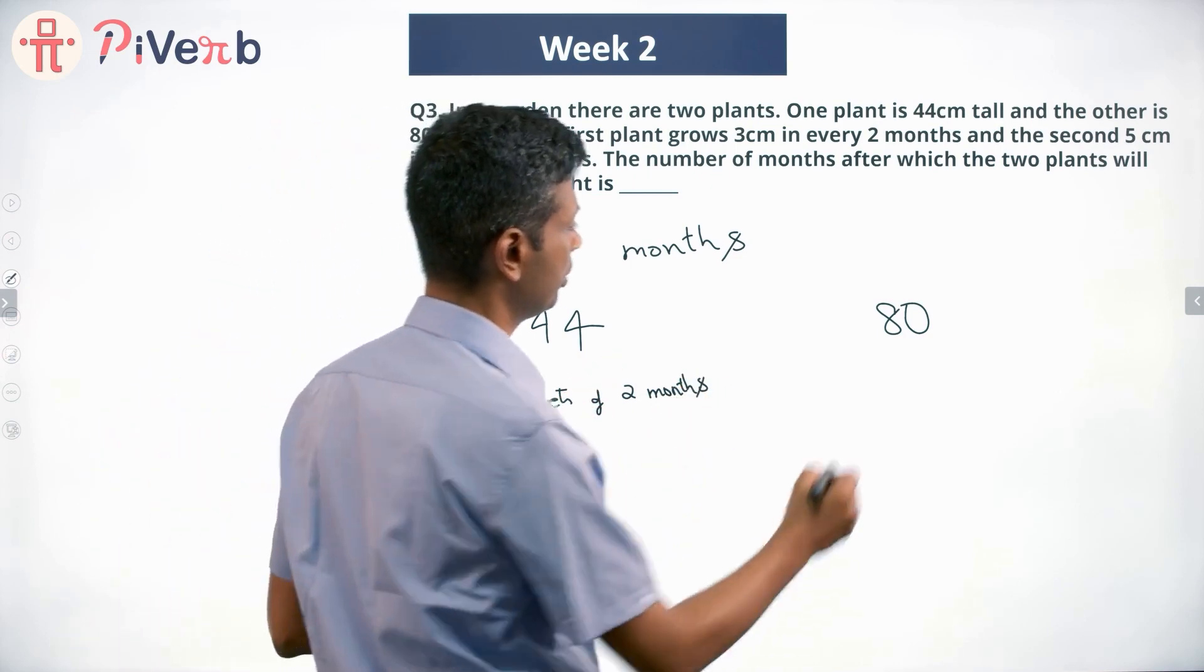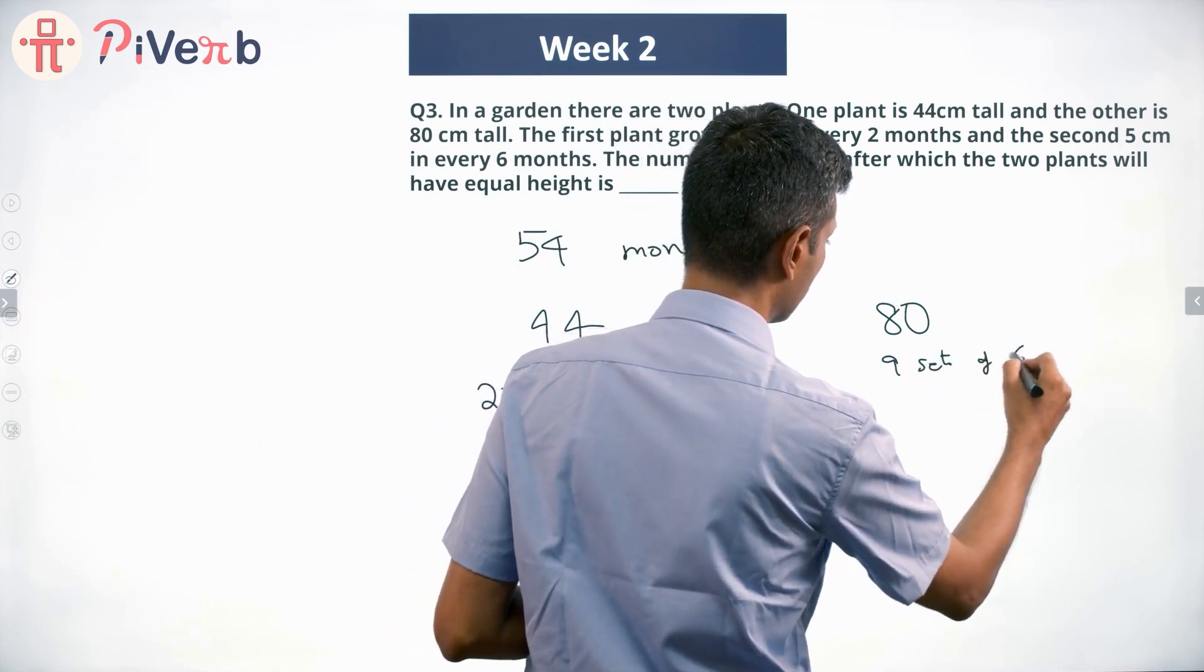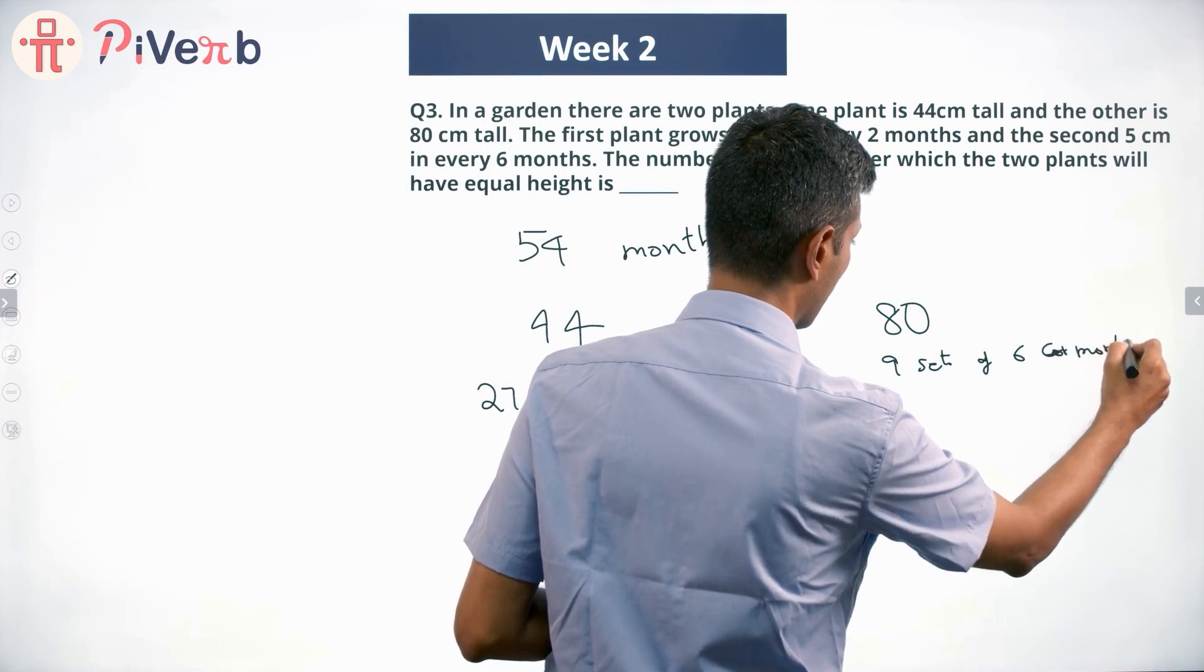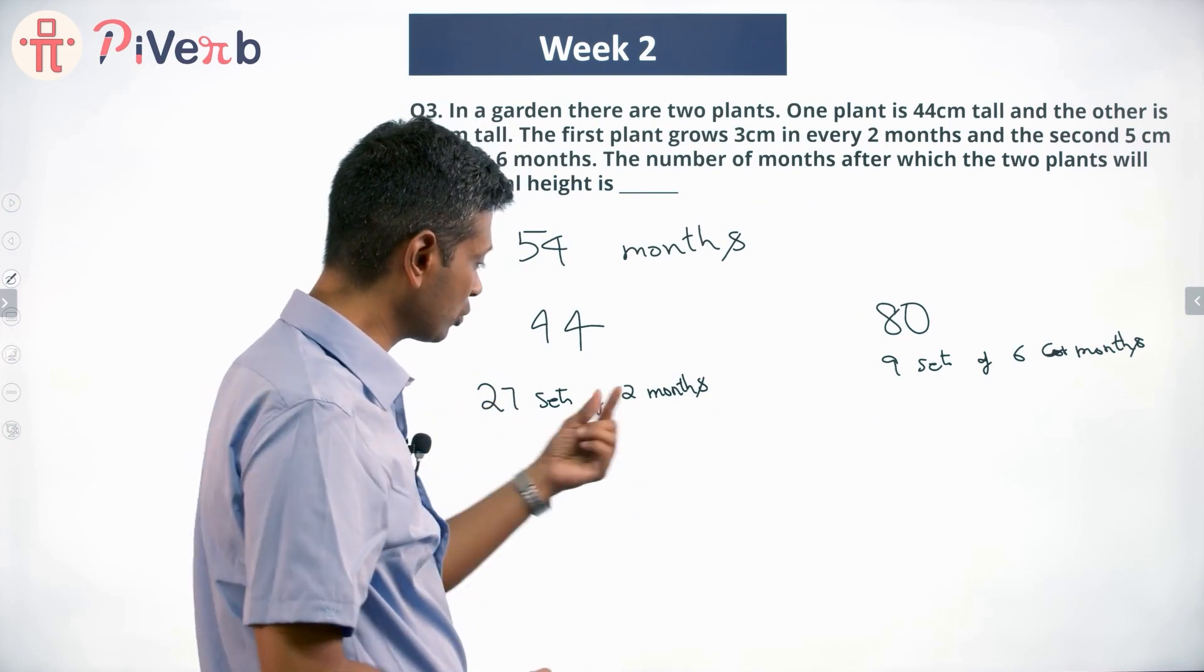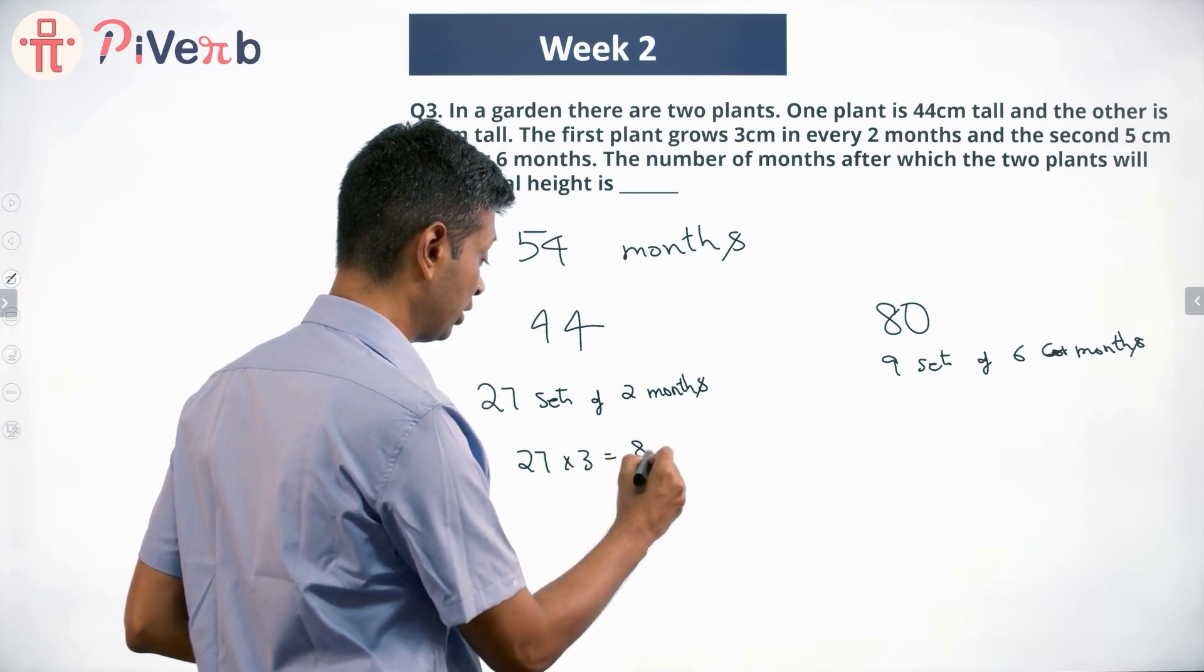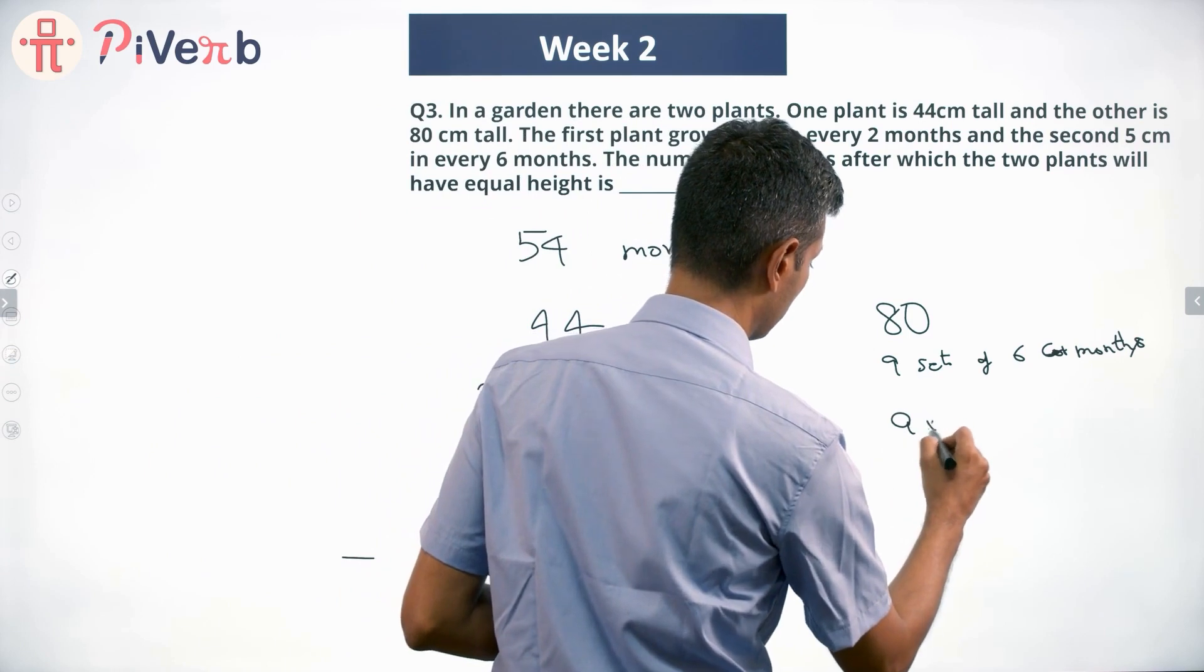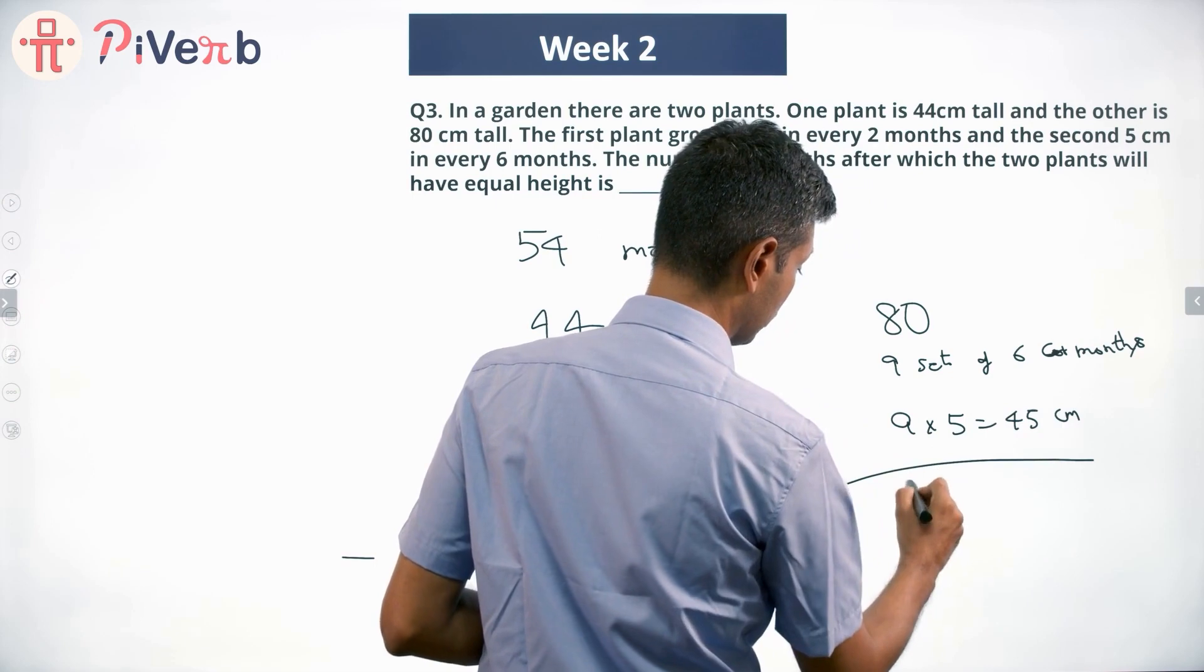This grows 54 centimeters, or 9 sets of 6 months. In this case, 27 sets of 2 months each. Each 2 months will be a 3 centimeter growth. 27 times 3 equals 81 centimeters this grows. This is 9 times 5 equals 45 centimeters this grows.